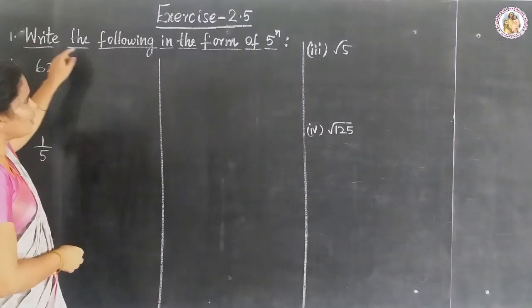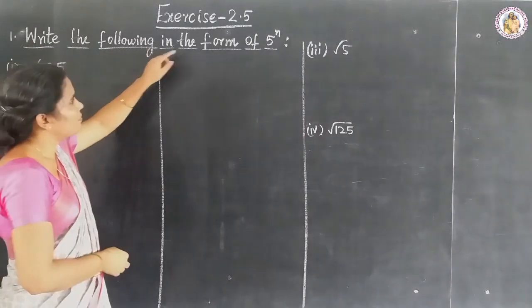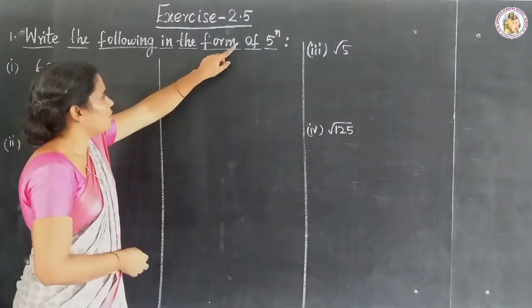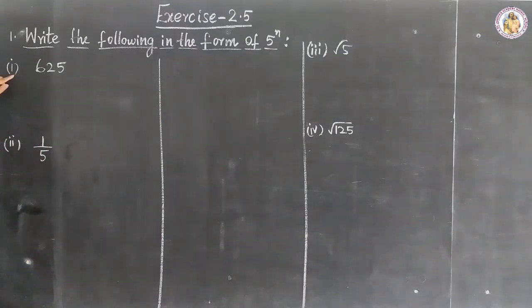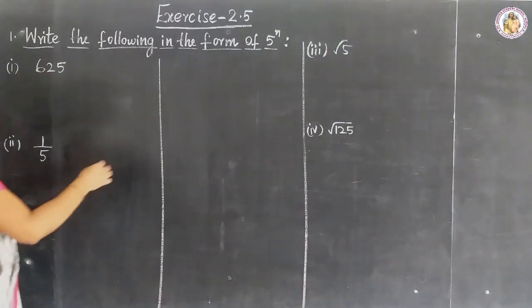Write the following in the form of 5 to the power of n. Sub-question 1: 625.